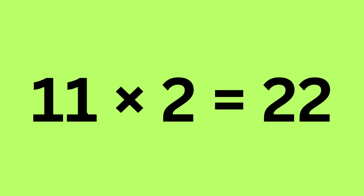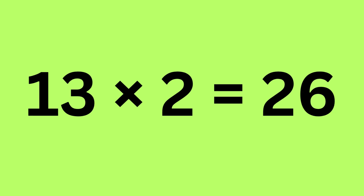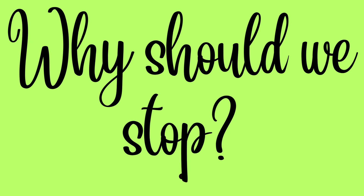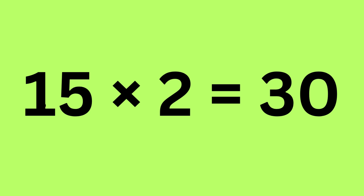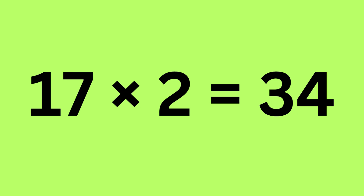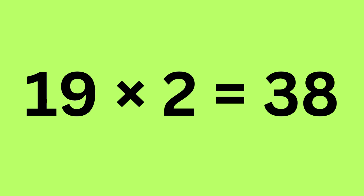11 times 2 is 22, 12 times 2 is 24, 13 times 2 is 26, 14 times 2 is 28 — why should we stop? Let's go higher! 15 times 2 is 30, 16 times 2 is 32, 17 times 2 is 34, 18 times 2 is 36, 19 times 2 is 38.